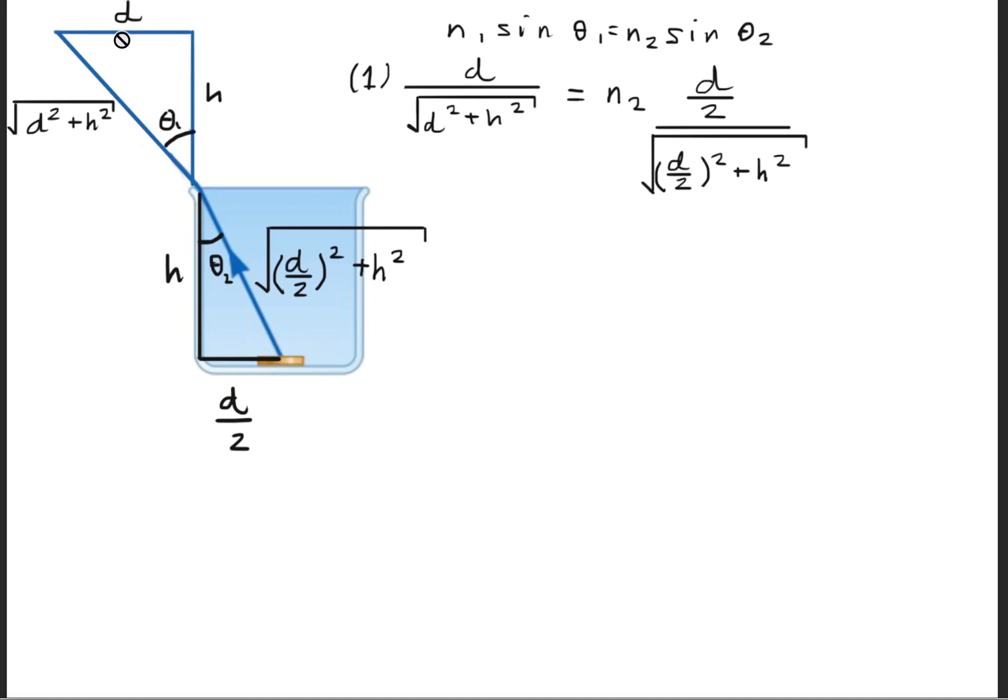So in this case, the opposite is this d variable right here. The hypotenuse is the square root of d squared plus h squared. We're going to go ahead and leave the second index of refraction in its variable form. We're going to take the sine of theta 2, and the sine of theta 2 is simply d over 2 divided by the square root of d over 2 squared plus h squared.